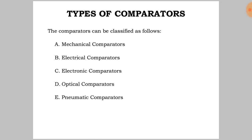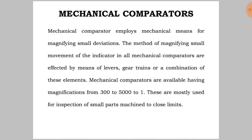Comparators can be classified as follows: mechanical comparator, electrical comparator, electronic comparator, optical comparator, and pneumatic comparator. The mechanical comparator employs mechanical means for magnifying small deviations.